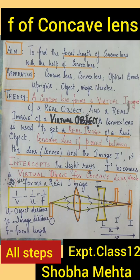Welcome to my channel, Learn with Shobha Mehta. To find the focal length of a concave lens, we need a convex lens because a concave lens forms a virtual image of an object needle, which is a real object. So, a convex lens forms a real image I dash. Remove parallax. This is the first part of the experiment.